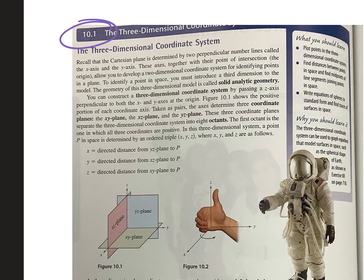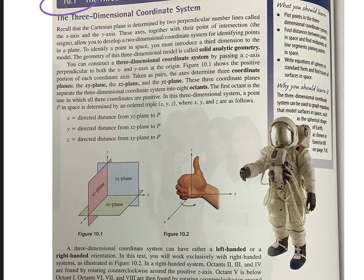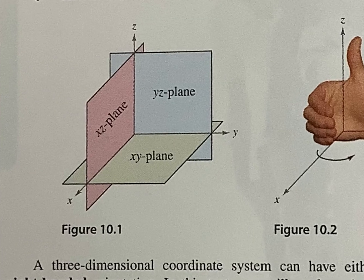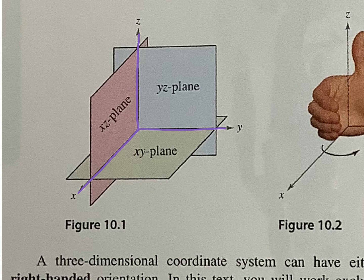Section 10.1 covers the three-dimensional coordinate system. Before, we've just been doing two-dimensional with x and y — now we're adding z. So our x, y, z plane has an x-axis, y-axis, and z-axis, which pokes out of the top. If x and y were flat on paper, z would be coming straight up. It just adds a third dimension.